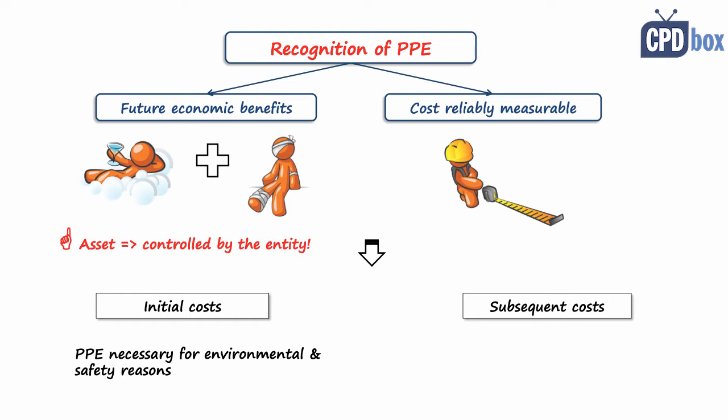shall be recognized as an asset too. In relation to subsequent costs, some assets require regular major inspections like overhauling or replacement of major parts. All of these shall be included in the carrying amount of an item although incurred subsequently.